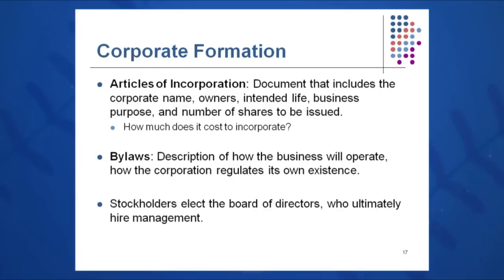The stockholders — which was essentially just the president — elected the board of directors, who were the same people. It's a very small corporation, not the big organization form you saw in the prior organization chart. The CFO had to do everything, including take out the trash and sweep the floor. In the small corporation, it's a lot different. The stockholders elect the board of directors, and the board of directors will hire and fire management.